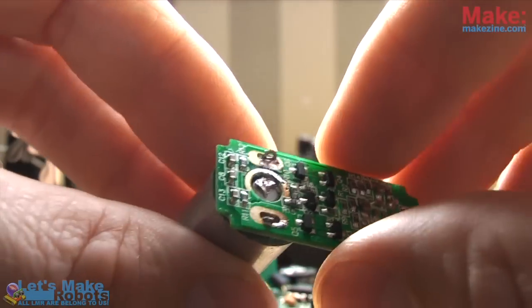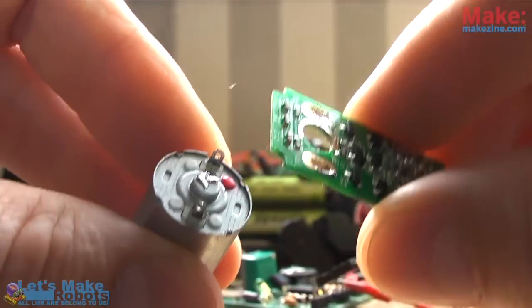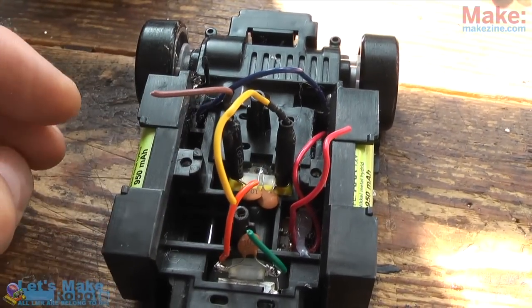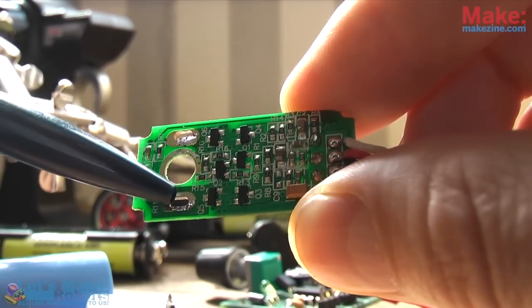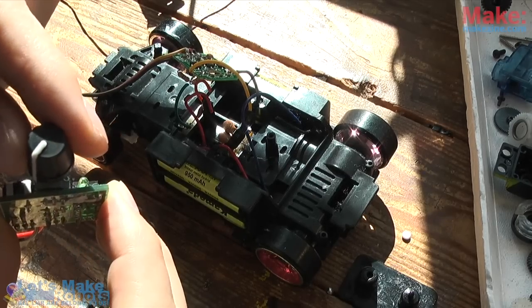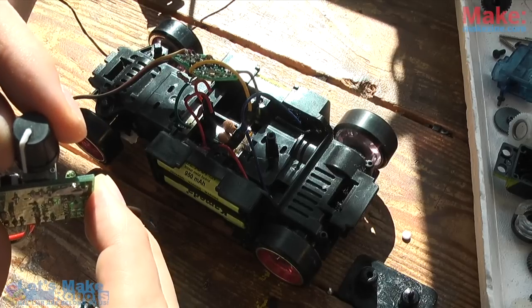I desoldered the motor from the board and in its place I soldered the wires to the motor that makes the car drive. And there you have it, now the drive motor of the car can be controlled by a simple pulse-width signal.